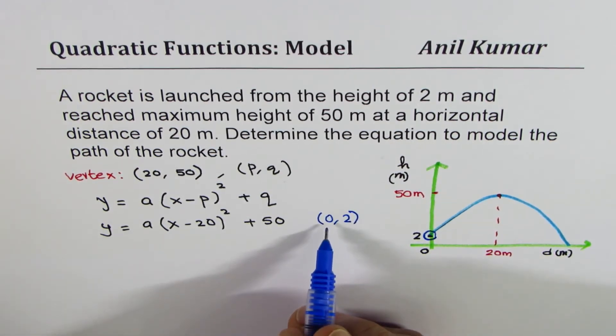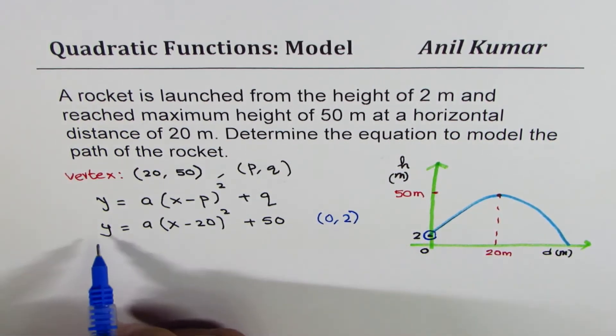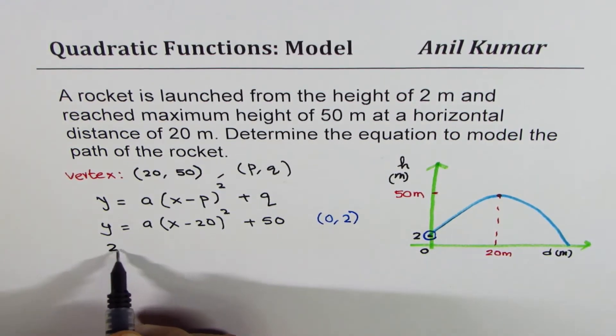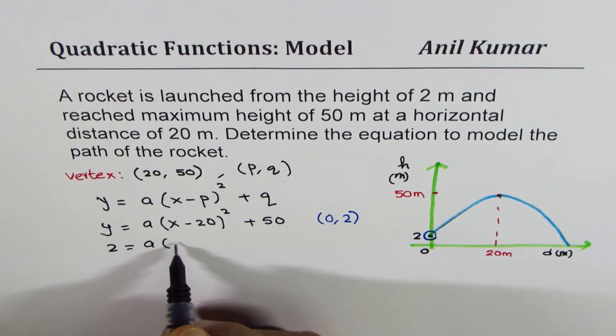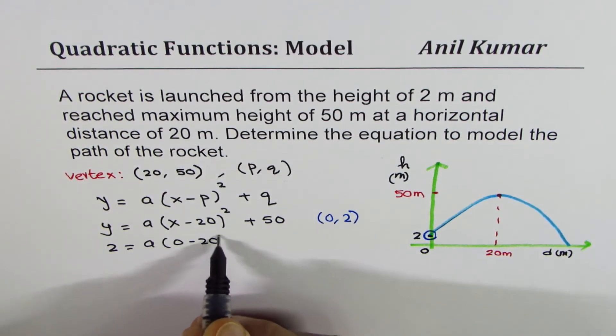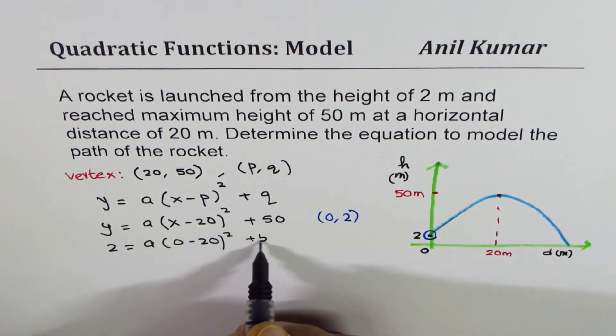So we can use this point to find the value of a. So we will substitute 0 for x, 2 for y and calculate. So y is 2, equals a times (0 minus 20) whole square plus 50.